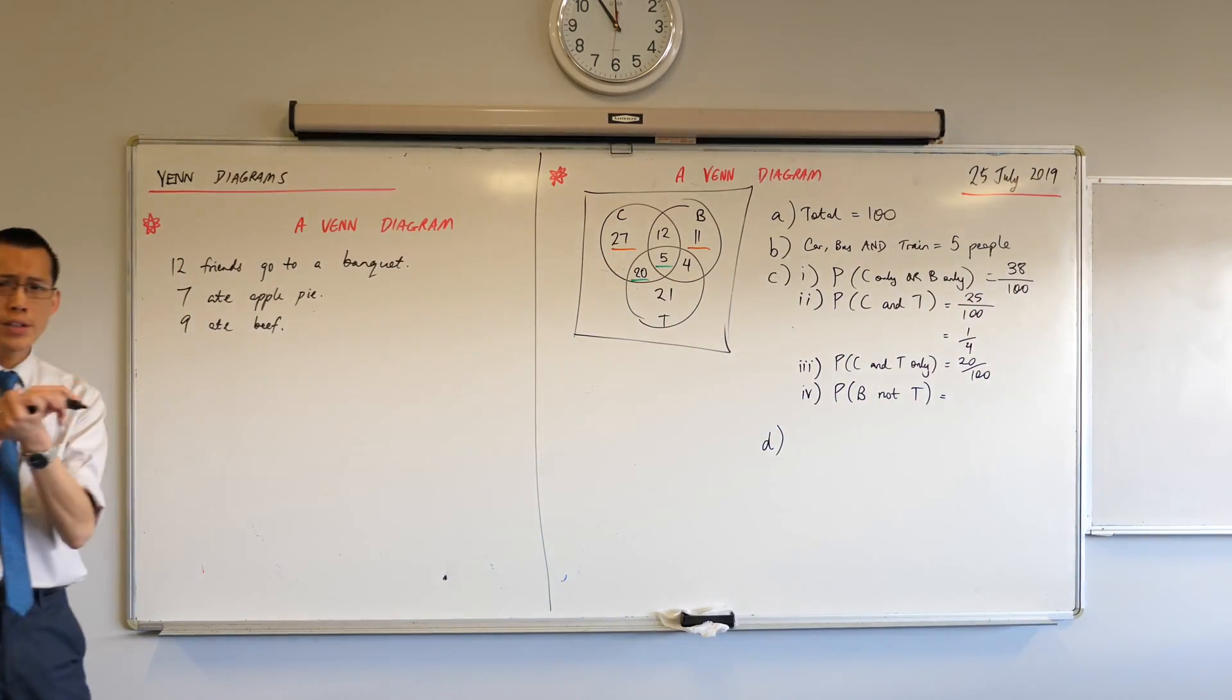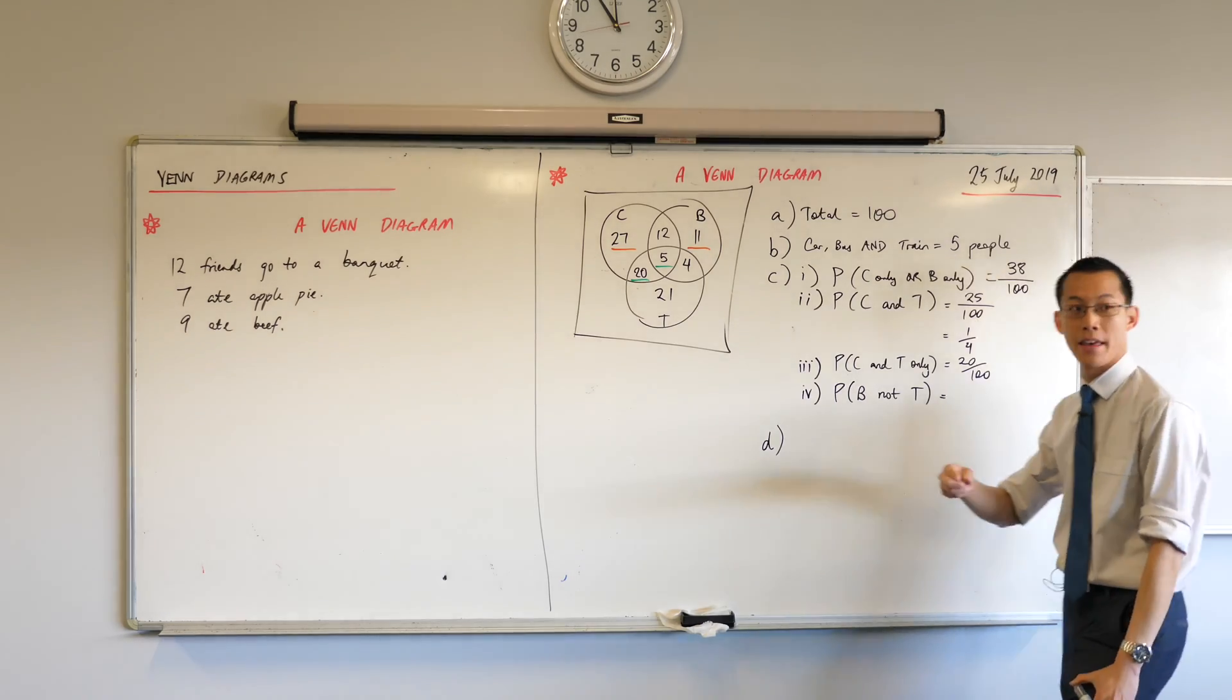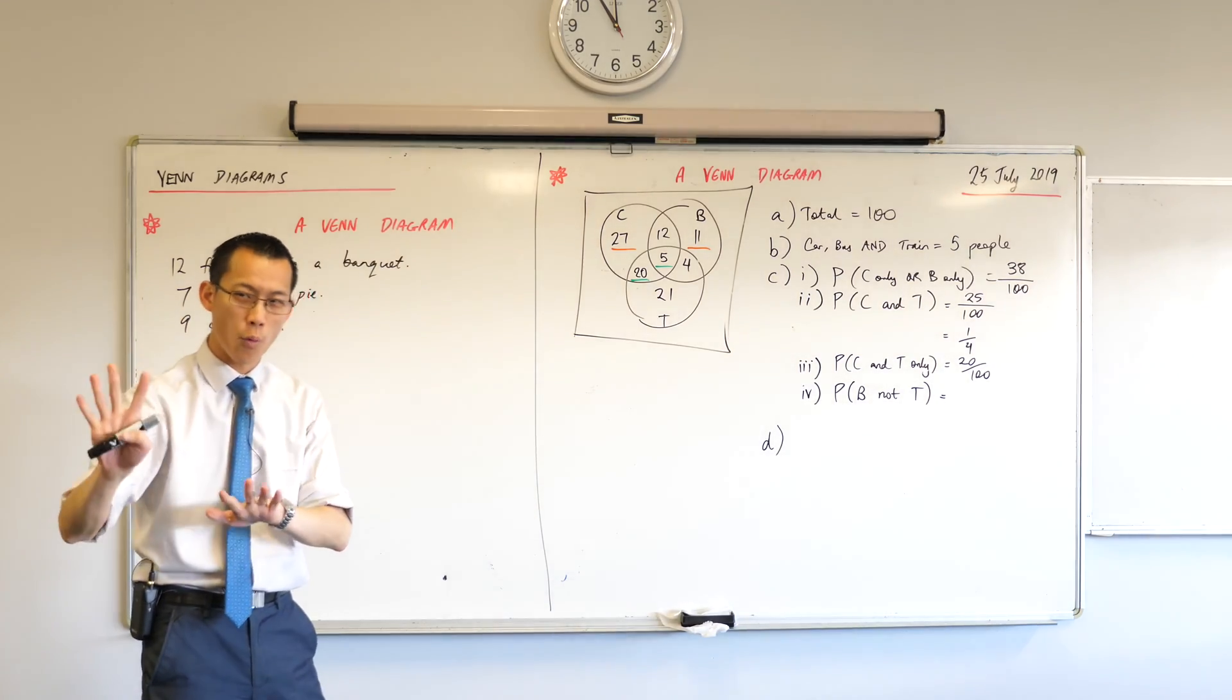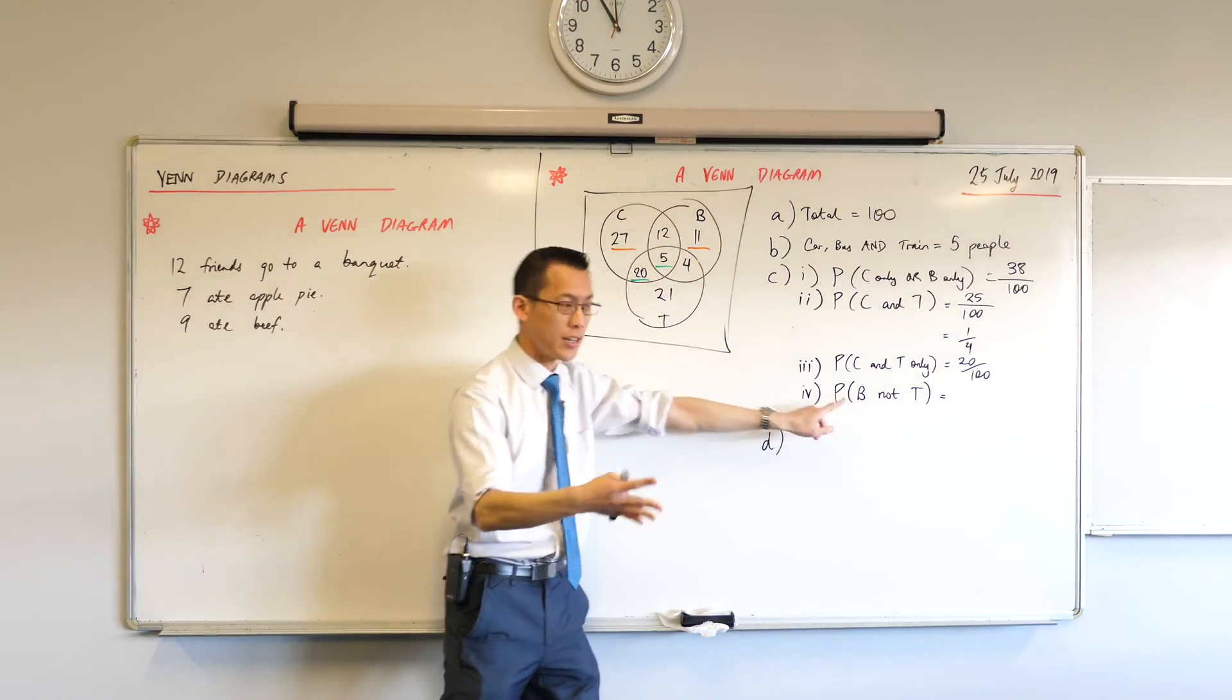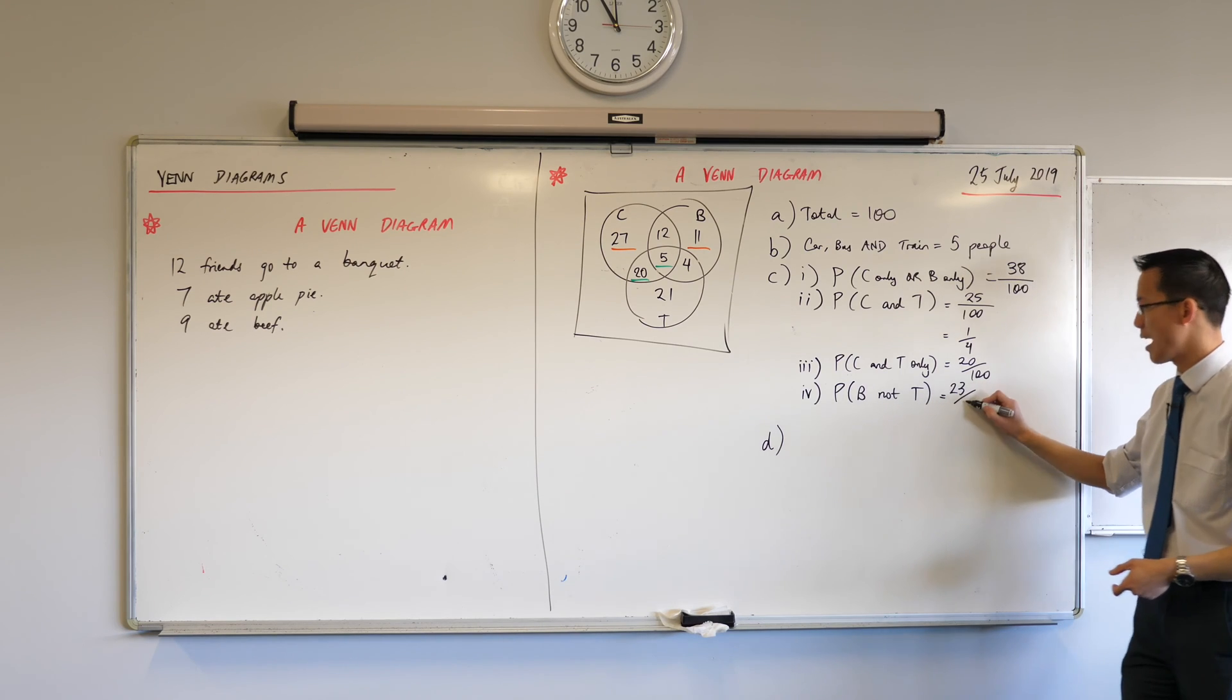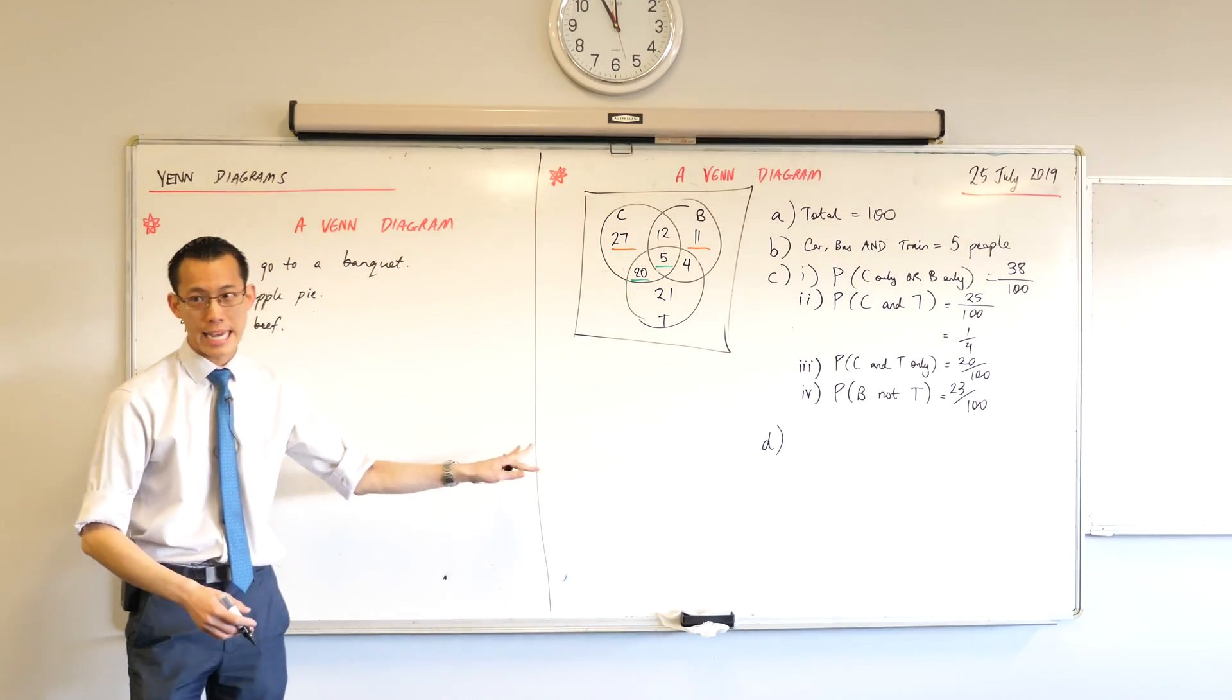And then this last one. The probability of taking the bus and not the train. Which group of people is this? Does anyone feel confident that they could talk us through how they came up with their number? The 11 and the 12, but then you can't put the 5 and the 4 because they both take the train. Very good. Fantastic. You said the 11 and the 12, thumbs up, because they're bus people. The reason we haven't included the 5 and the 4 was they also take the train. So therefore, 12 plus 11 gives us 23 out of 100.